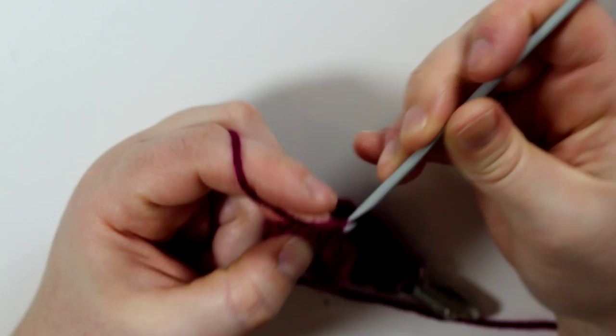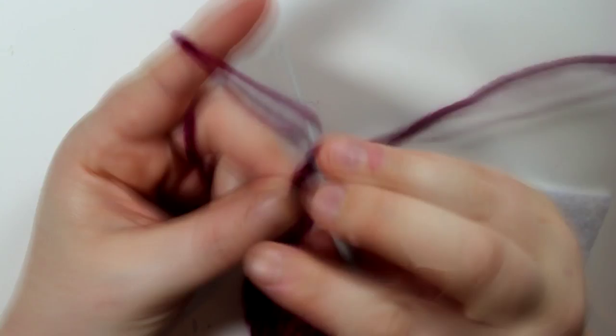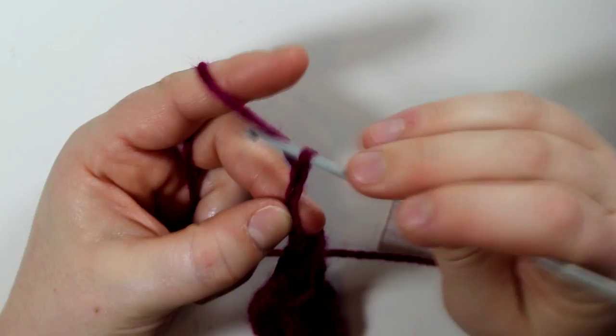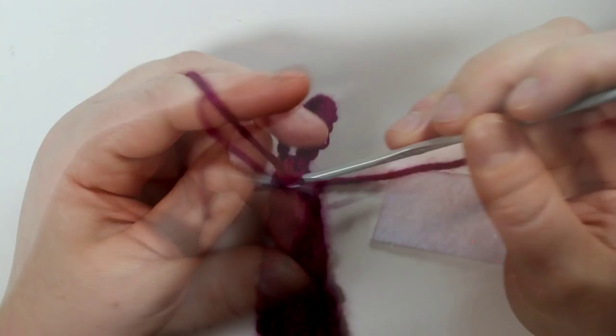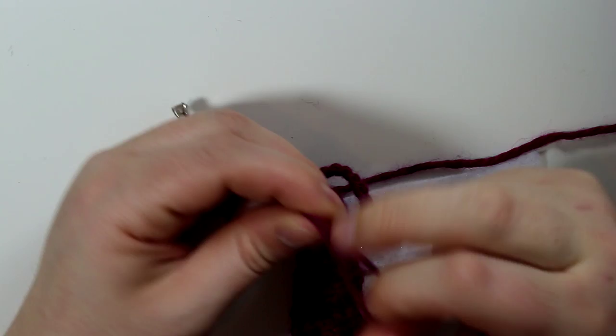Then I'm going to chain about 17 chains, and this is just going to create the little end where your pacifier will attach onto. Then you're going to just fasten off and then leave a generous tail so that you can sew it back onto the base of the pacifier clip.